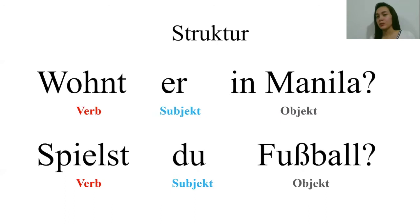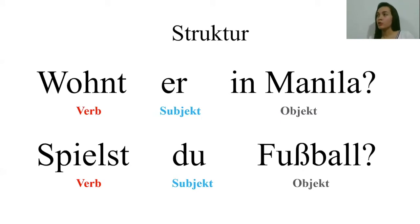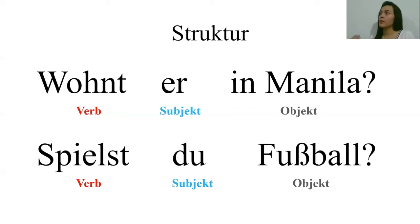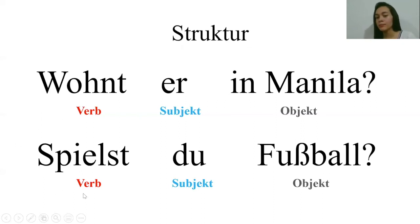You can build every question with that structure. For example, if you want to build the question 'Do you play football?': 'play' is 'spielen', 'du' is 'you', and 'football' is 'Fußball'. So the structure is verb — 'spielst', subject — 'du', object — 'Fußball': Spielst du Fußball? And that's the question. This is how every Satzfrage is built.